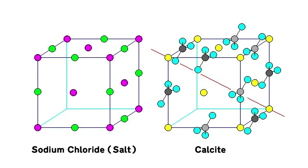However, calcite is not cubic. The carbonate groups break up this cubic symmetry in a number of ways. First, their threefold symmetry axes line up with only one of the symmetry axes of the cube, shown here in red. Second, they alternate in orientation, shown in the diagram by two shades of grey. Most importantly, the wide spacing of the carbonate groups — which are larger than chlorine — stretches the atomic distances and distorts the cube into a rhombohedron.